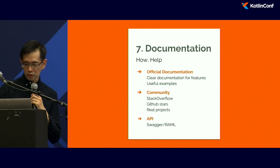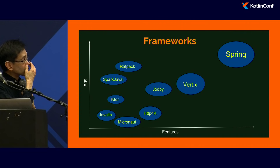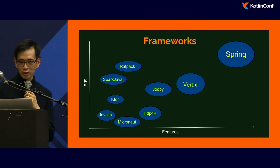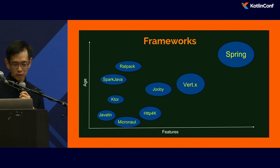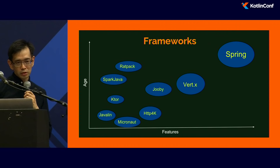Which framework should you use? There are a rough timeline of when frameworks were released versus the features they have. The oldest is Spring, and that has the most features. There are native Kotlin frameworks including Javalin, Ktor, and HTTP4K. There are sparser frameworks like Spark Java and Rat Pack. And there's a newer one called Micronaut that also has Kotlin support, written by the Groovy folks.